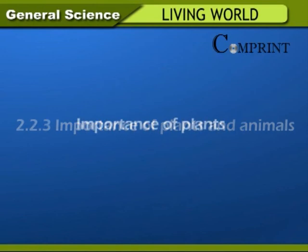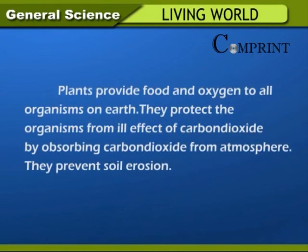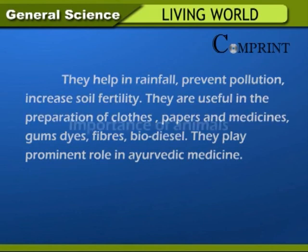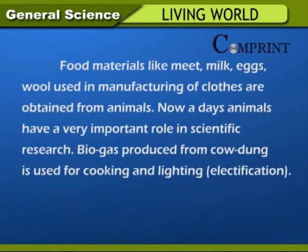Importance of plants and animals. Importance of plants: Plants provide food and oxygen to all organisms on earth. They protect organisms from the ill effects of carbon dioxide by absorbing it from the atmosphere. They prevent soil erosion, help in rainfall, prevent pollution, and increase soil fertility. They are useful in preparation of cloth, paper, and medicines. They give gums, dyes, fibers, and biodiesel, and play a prominent role in Ayurvedic medicine. Importance of animals: Food materials like meat, milk, eggs, and wool used in manufacturing cloth are obtained from animals. Animals have a very important role in scientific research. Biogas produced from cow dung is used for cooking and lighting.